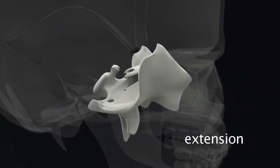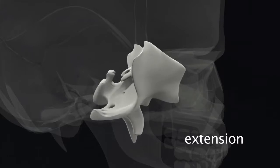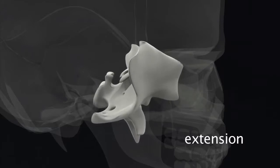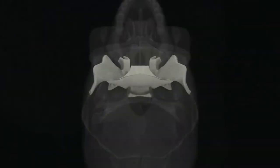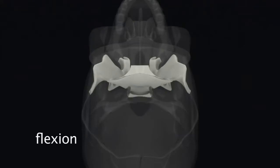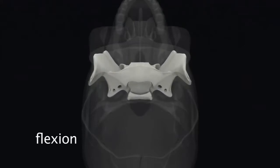And in extension, the greater wings and your thumbs will come back toward you. So that is the direction that you want to listen to. The sphenoid moving, the greater wings moving away toward your patient's feet in flexion as the body fills.